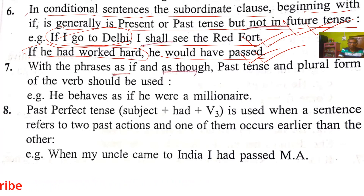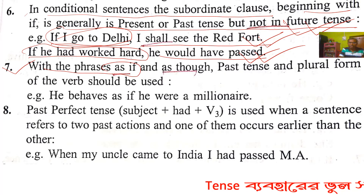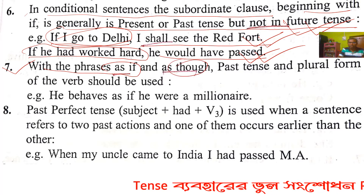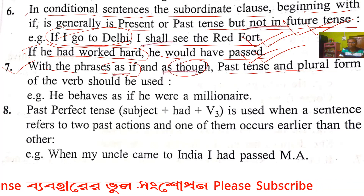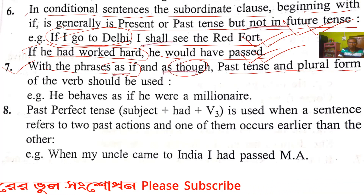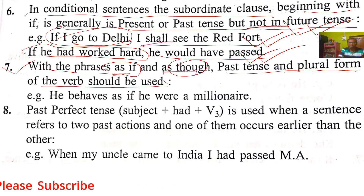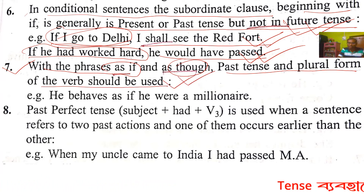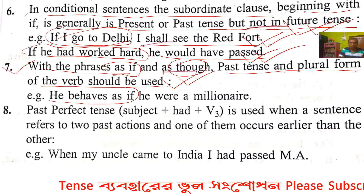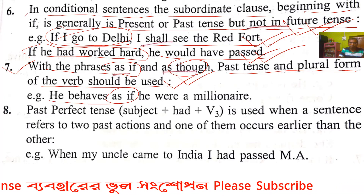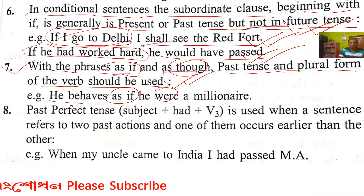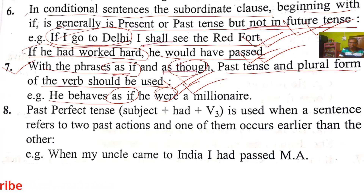Rule 7: With the phrases 'as if' or 'as though', past tense and the plural form of the verb should be used. Ei phrase-gulo thakle past tense ebong plural form byabohar korte hobe. Example: 'He behaves as if he were a millionaire.' Here 'were' is used — plural form of past tense — not 'was'.